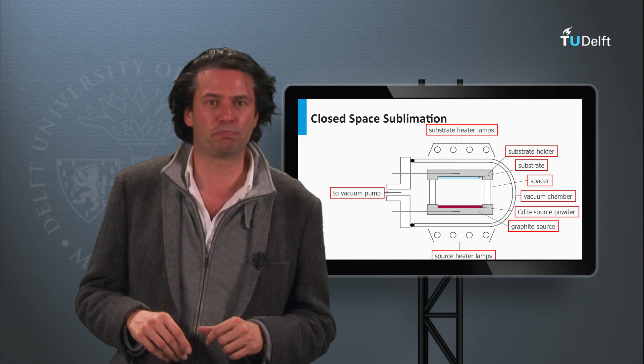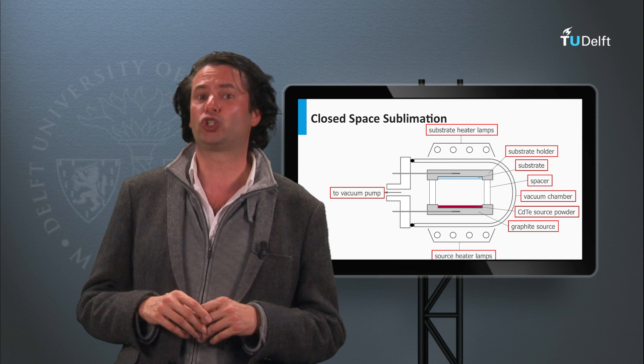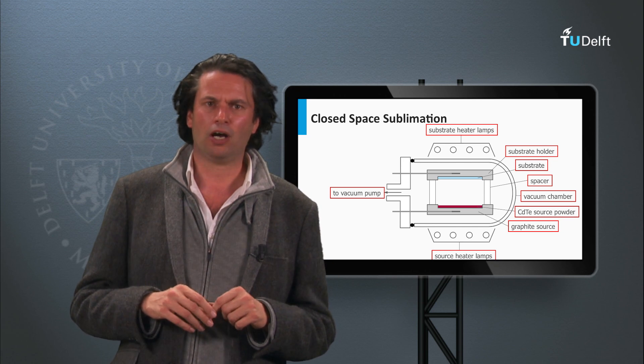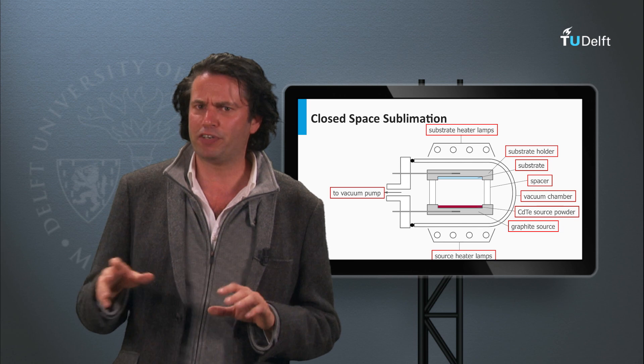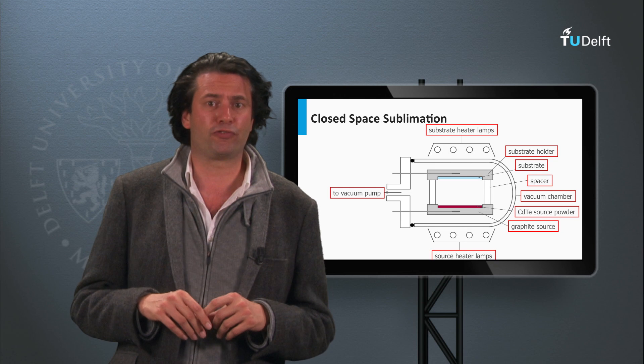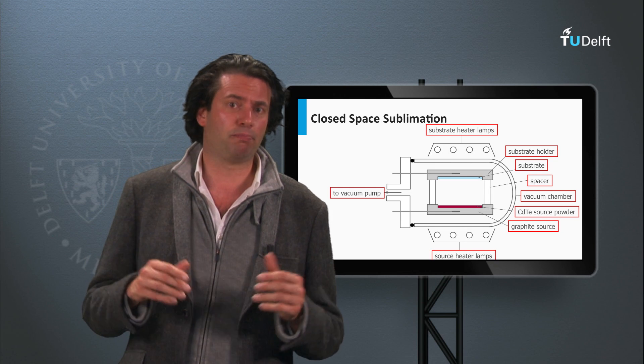First Solar and Antec are companies producing the cadmium telluride solar modules using the closed space sublimation method. Among new start-ups moving into the cadmium telluride PV technology are Calyxo, Primestar Solar from General Electric, and Abound Solar.